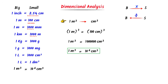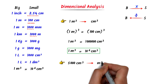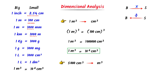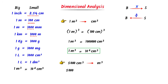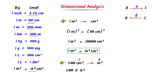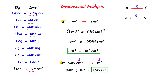Now consider this question: convert 5000 centimeter cube to meter cube. Centimeter cube is a smaller unit and meter cube is a bigger unit. I divide 5000 by the conversion factor, which is 10 to the power 6. After calculation, I get 0.005 meter cube. Thus, 5000 cm cube is equal to 0.005 meter cube.